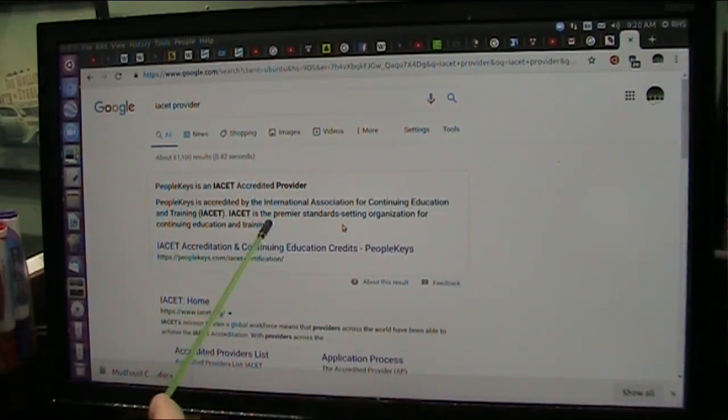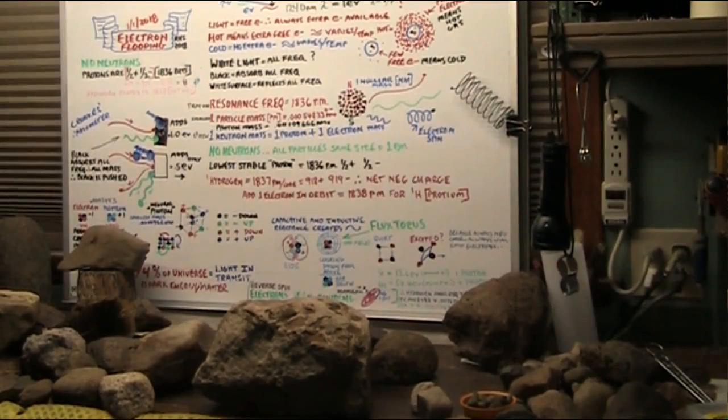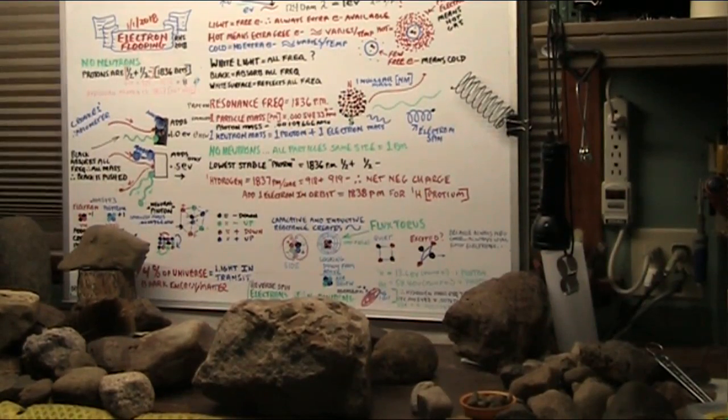They are the premier standard setting organization for continuing education and training. And my university that I will become associated with has this affiliation. I've had some extended discussions about it and it appears that this is going to happen. This is what's called the mud fossil college action plan. I'm going to be under the umbrella of this other university, which is accredited.